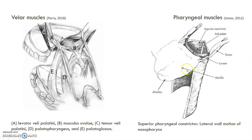When talking about the pharyngeal muscles, we can divide the pharynx into different components: the nasopharynx, the oropharynx, and the hypopharynx. For velopharyngeal closure, we're really focusing on the nasopharynx. The sides and back of the pharynx help create the back and side portions of the velopharyngeal port, and that works together with the levator veli palatini lifting and closing.